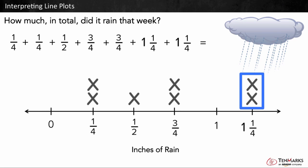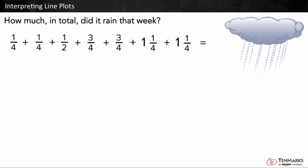Let's check our equation to make sure we added all the x's. There are seven x's and seven addends, so we have all seven days and how much it rained. Let's add the fractions. First, let's add the wholes. One plus one is equal to two.